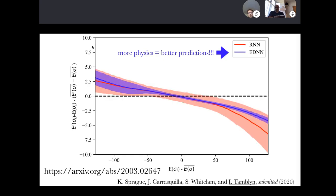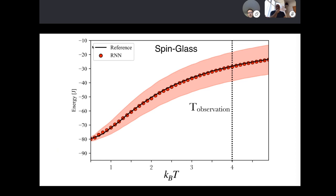Surprisingly, the EDNN trained on RNN outputs — never seeing real labels — actually shows smaller variance and closer agreement to ground truth than the RNN itself. Adding more physics into the model construction gives better predictions without ever seeing real data. We also studied other systems: Potts models (multiple states per spin) and spin glasses (fully random local couplings). Spin glasses are particularly interesting and challenging to equilibrate and sample, with a large body of literature focused on them.